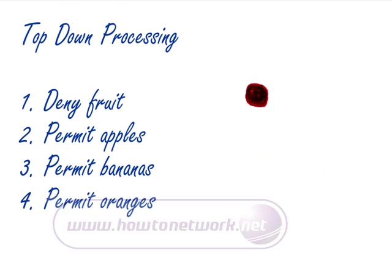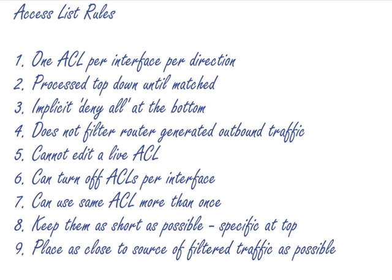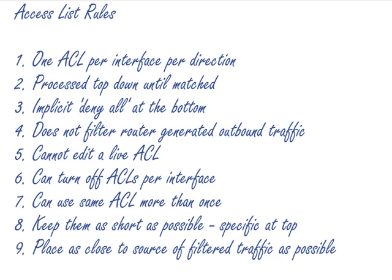So let's look at some ACL rules. I'm going to read all these out and then cover each one in a little bit more detail. These are the rules of the road and you need to know these. First one: you can only have one access list per interface per direction. The second one: access lists are processed top down until you reach a match - that's an important one.